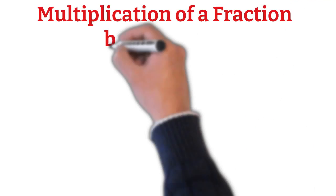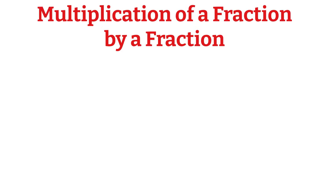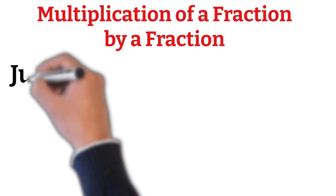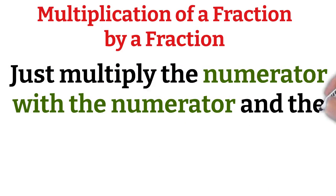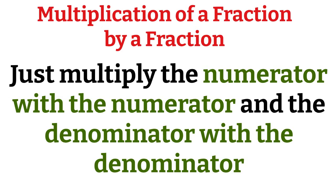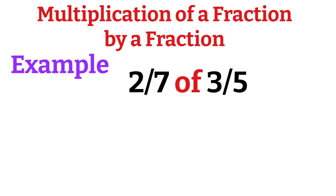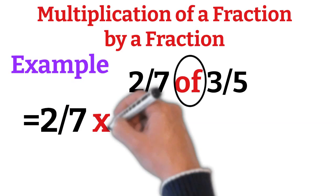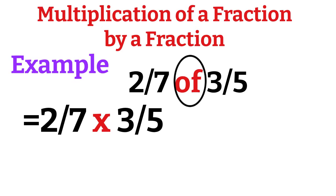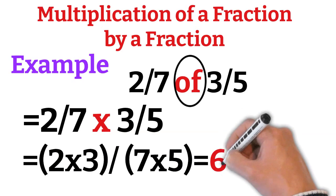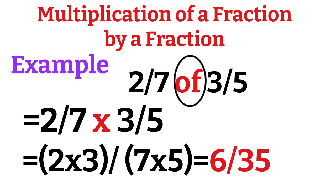Multiplication of a fraction by a fraction is very simple. Just multiply the numerator with the numerator and the denominator with the denominator. For example, 2/7 of 3/5. Note that 'of' represents multiplication. Thus, 2/7 of 3/5 = 2/7 × 3/5 = (2 × 3)/(7 × 5) = 6/35.